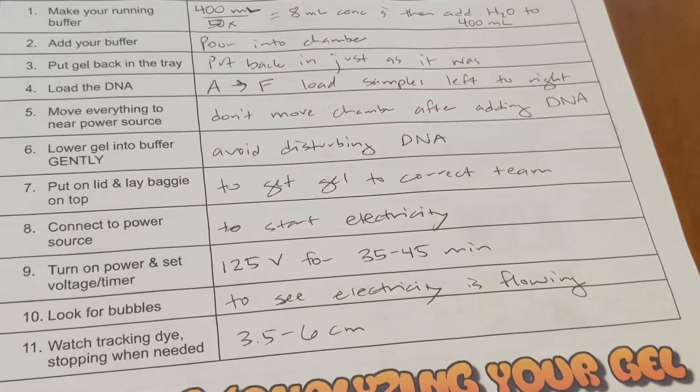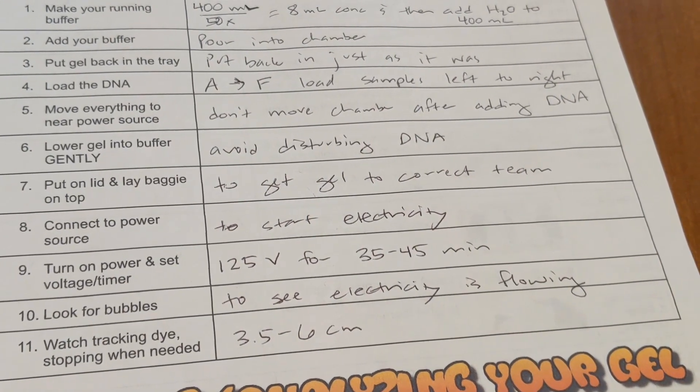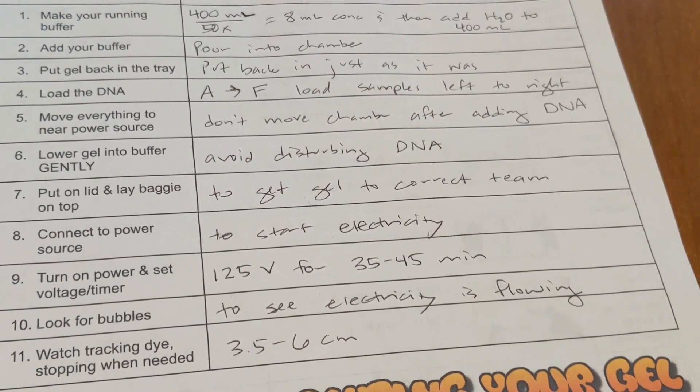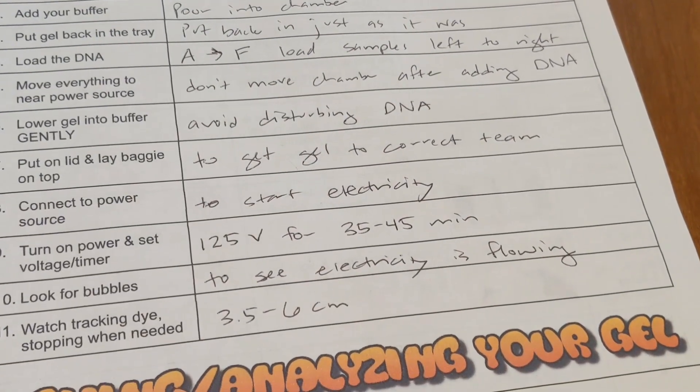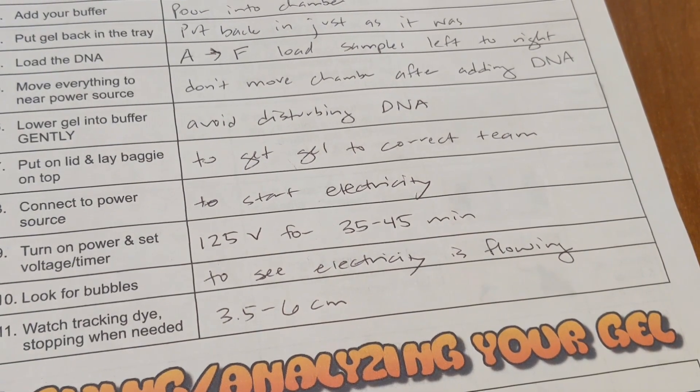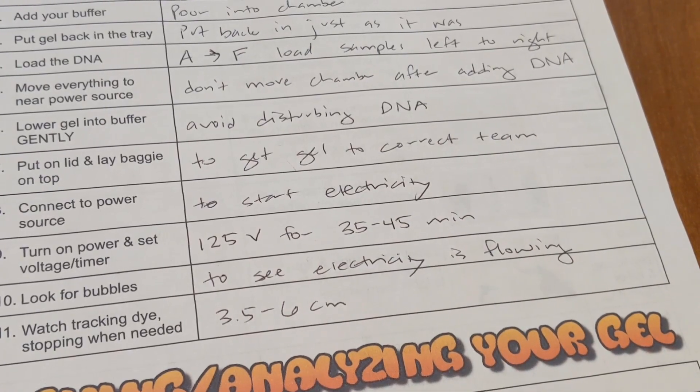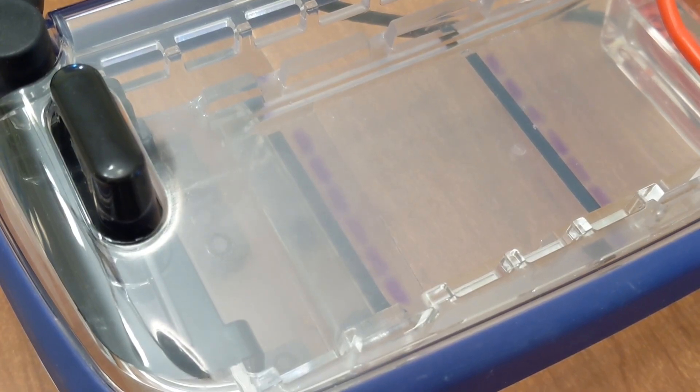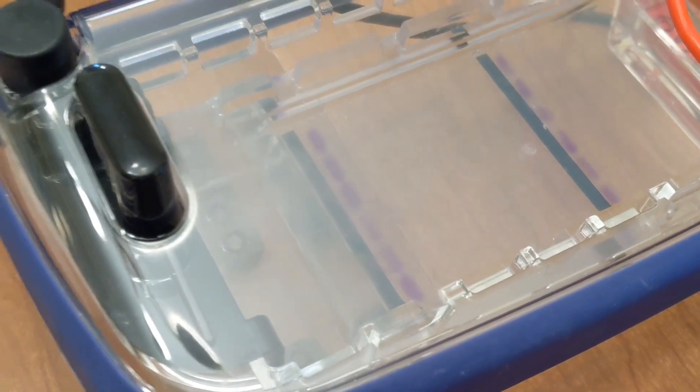So let's make sure we understand the purpose of each step. The baggie on top of the lid is to make sure that you get your correct gel back at the end of this. The power source is to run the electricity. We are setting ours for 125 volts for 35 to 45 minutes. We'll check it after 35 and see if it's gone far enough. The bubbles tell you that the electricity is running. And finally, the tracking dye. When you look in this chamber, what you're seeing is the tracking dye, not the actual DNA itself. And that's showing you approximately how far the DNA has migrated.